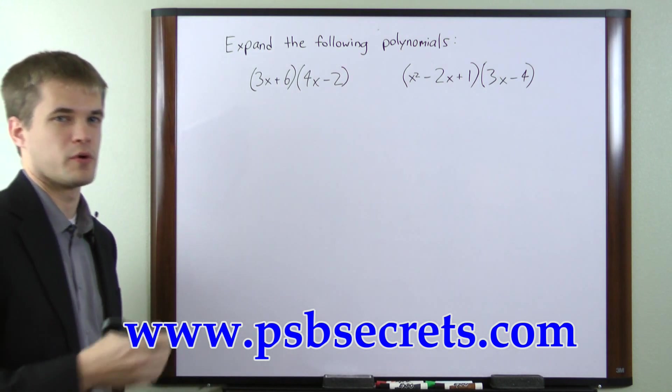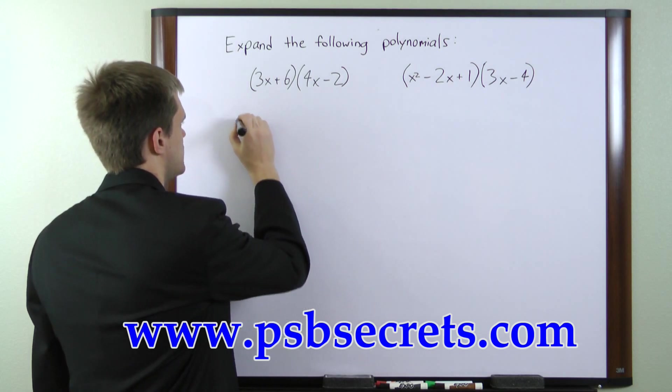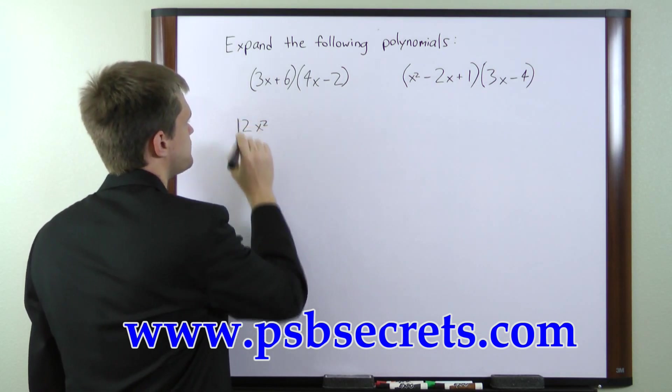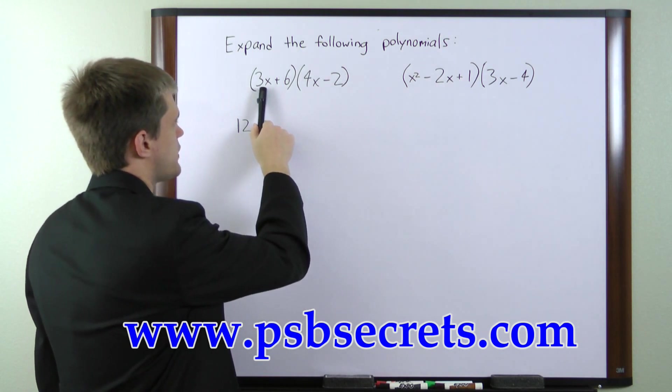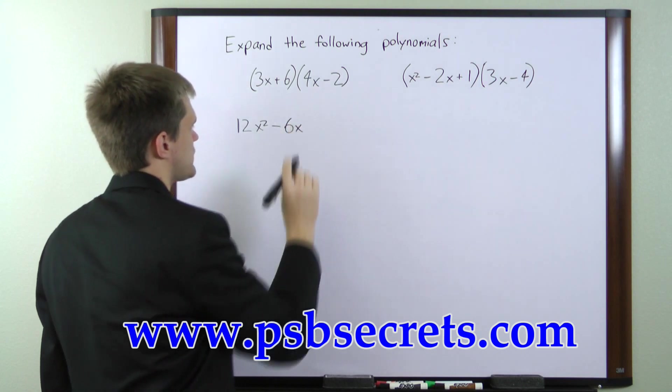That's the order in which we'll proceed here. The first pair is going to be 3x times 4x, which gives us 12x squared. The outside pair is 3x times negative 2, which gives us minus 6x.